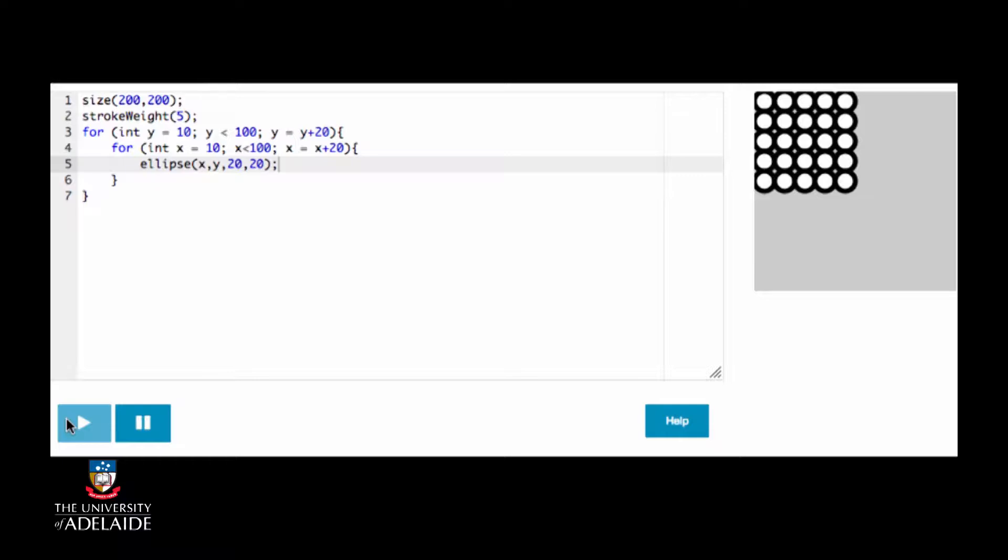Now all of these ellipses are white, so what we will do now is draw them in increasingly darker colors, starting from white. Remember a fill of 255 gives us white, and then darkening the color by decreasing from 255. To do this, we'll start with a variable called fill color, which we initialize to 255. In the innermost for loop, we set the fill color to be fill color, like this.